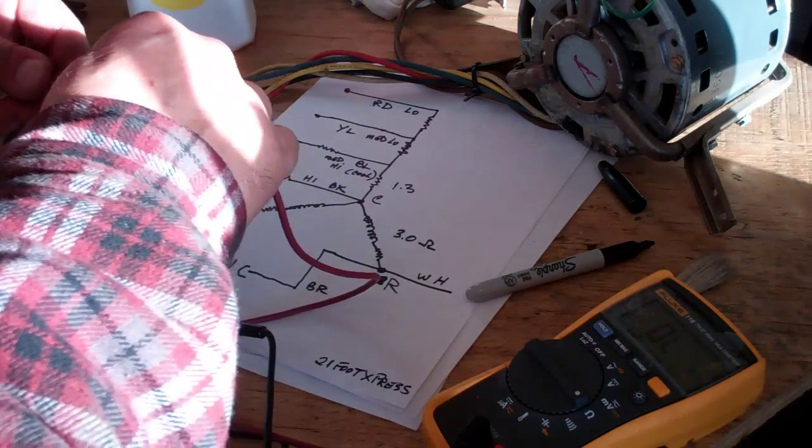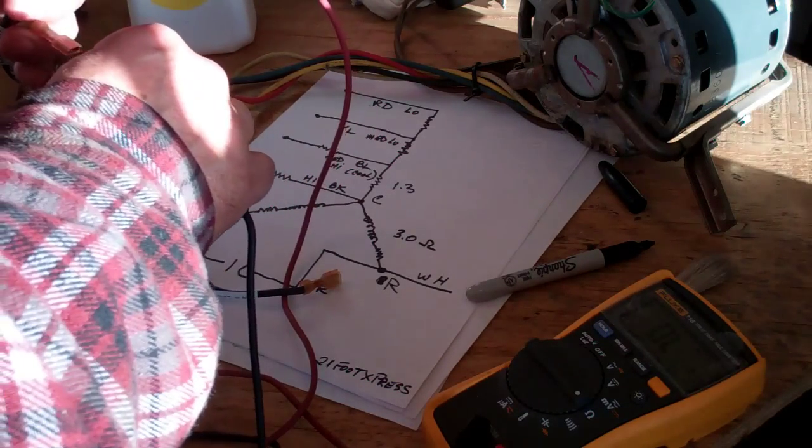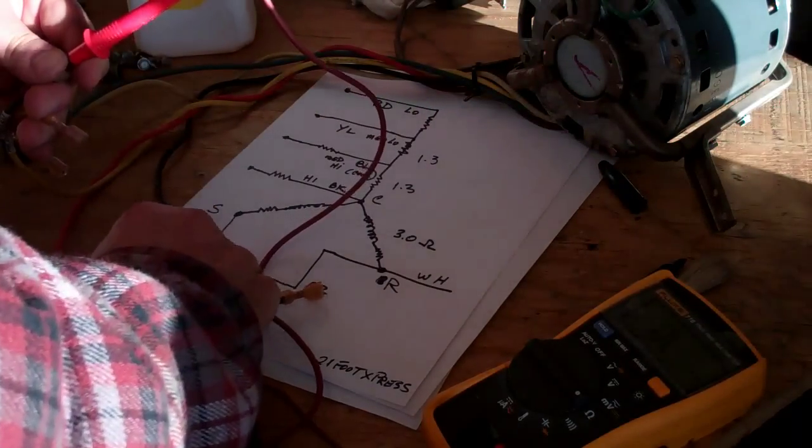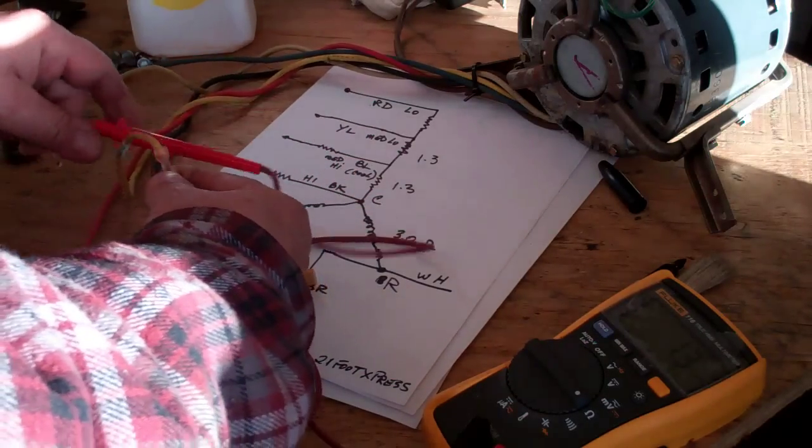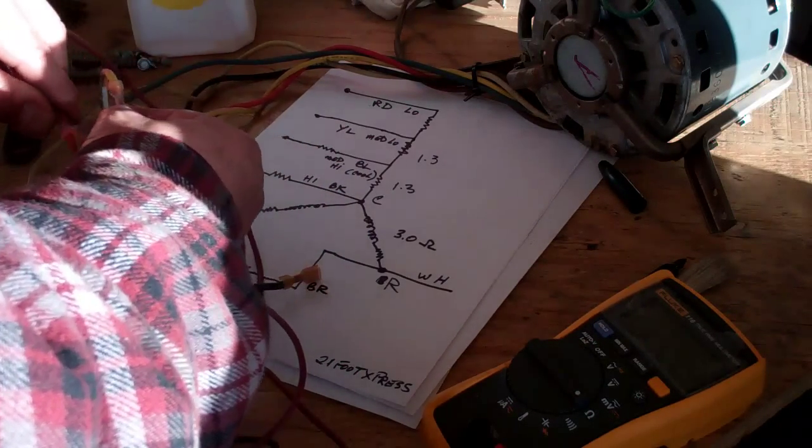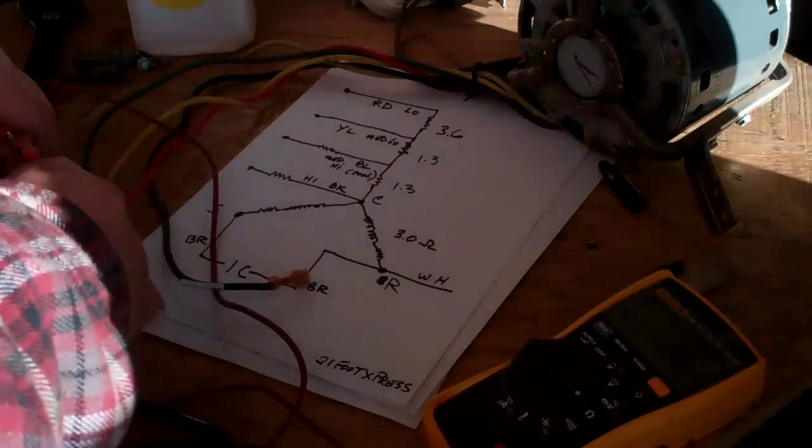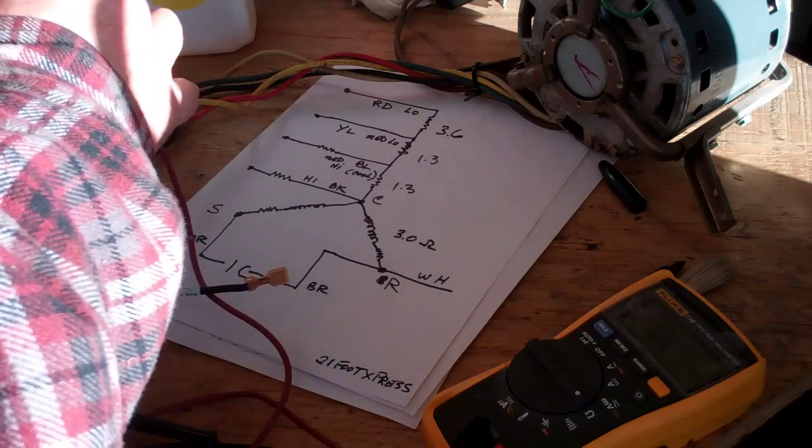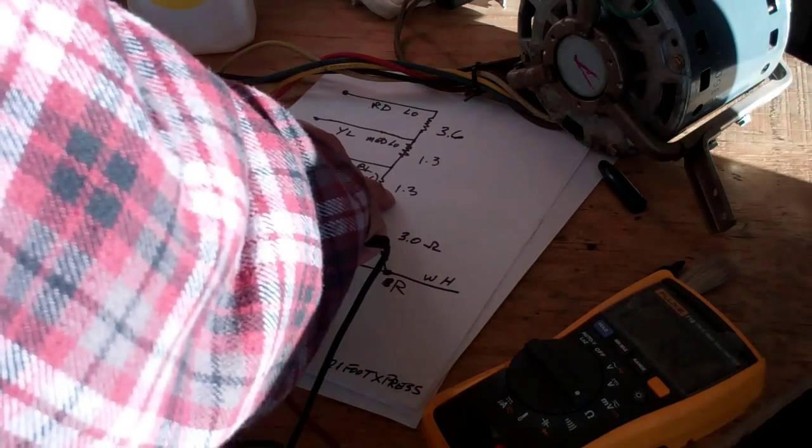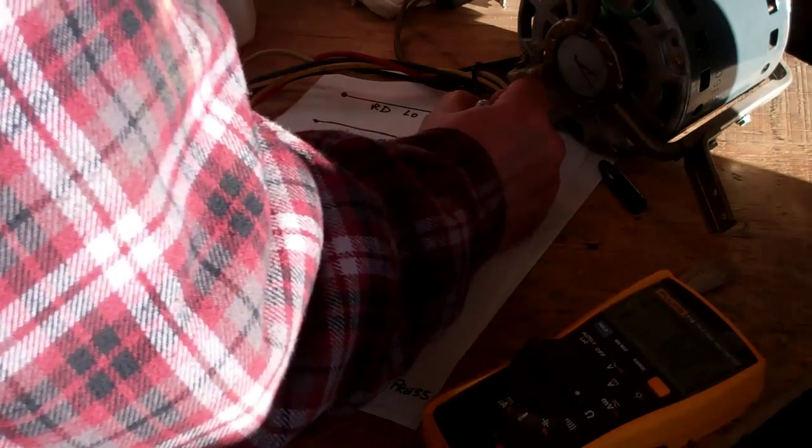Then we go from blue to yellow. Again 1.3. Then we go from yellow to red. And we get 3.6. Now if we go from red to black, we should have somewhere around 2.6, 5.6, 6.2. We get 6.0. So yeah, that's close enough.